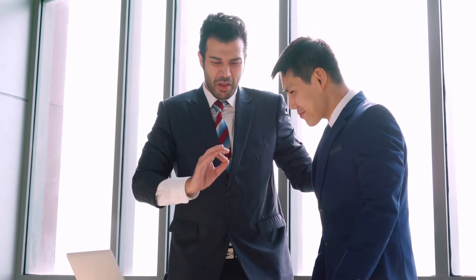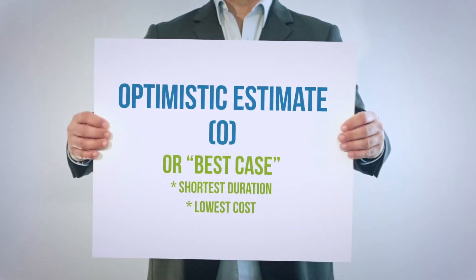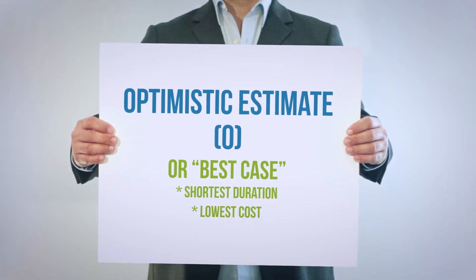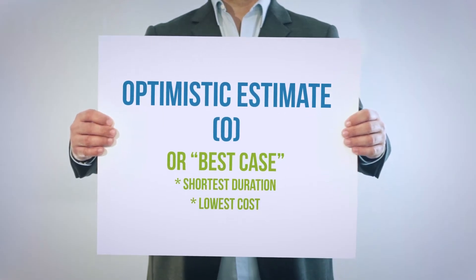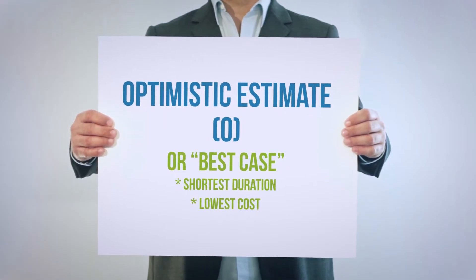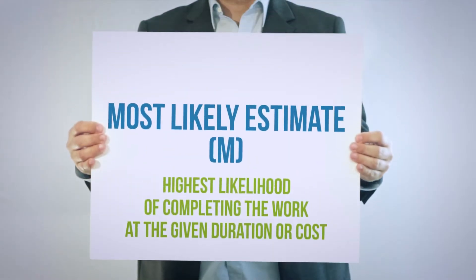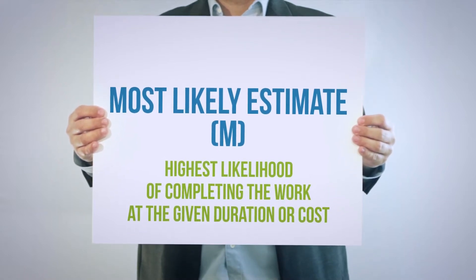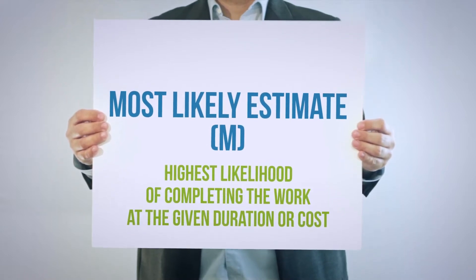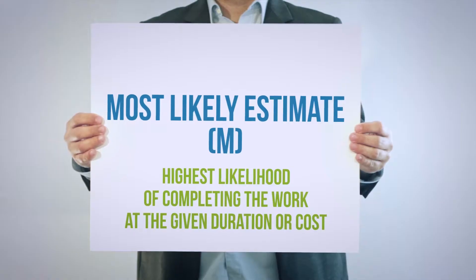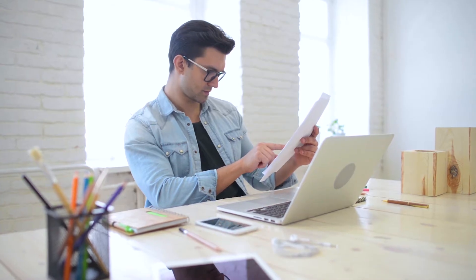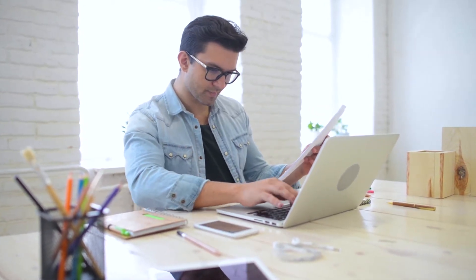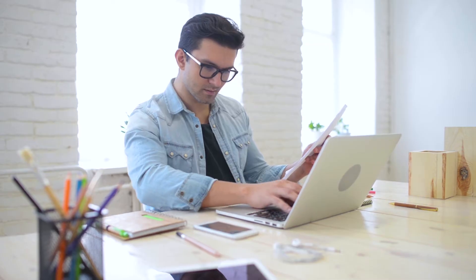We need to collect the Optimistic Estimate, or best case, which is the shortest duration or lowest cost to complete the work. The Most Likely Estimate, represented as M, is based on changes that have been planned for and can be mitigated. It captures the highest likelihood of completing the work in the given duration or cost.